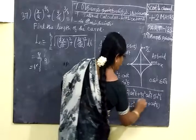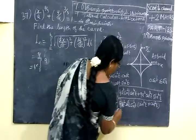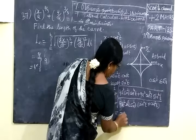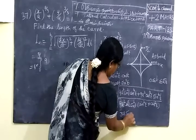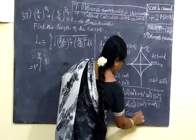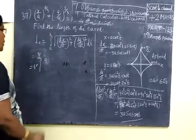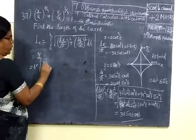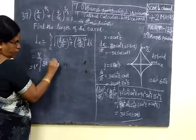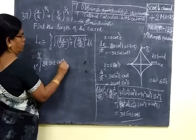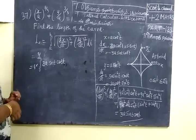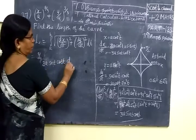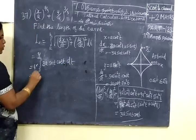So this is the root of 9a². This is one. Now we are writing 3a sin t cos² t. Here you write 3a sin t cos² t. This is the dt you write.